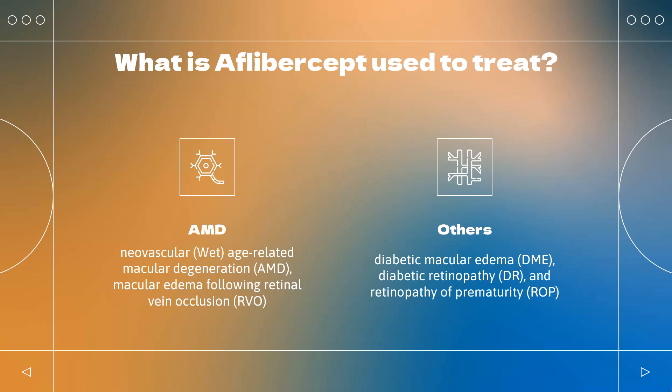The systemic injection, known as Ziv-Aflibercept, in combination with 5-fluorouracil, Leucovorin, and Irinotecan (FOLFIRI), is for the treatment of metastatic colorectal cancer that is resistant to or progressed following treatment with oxaliplatin.